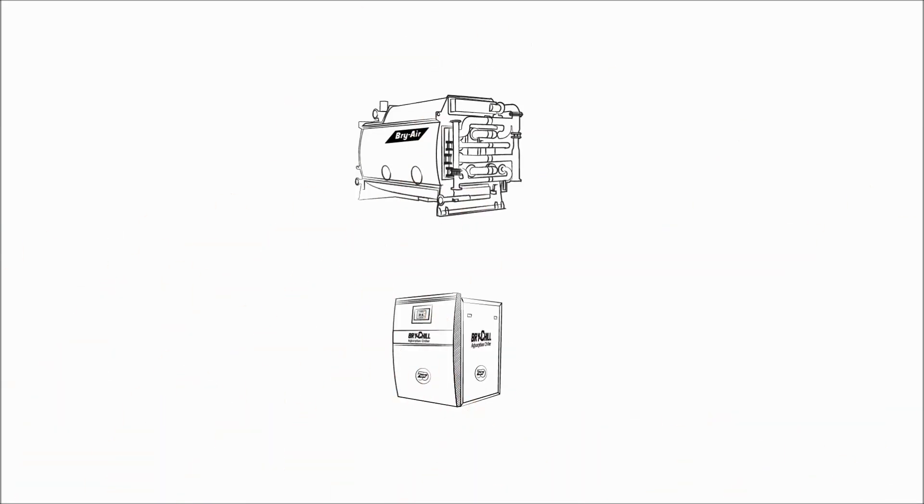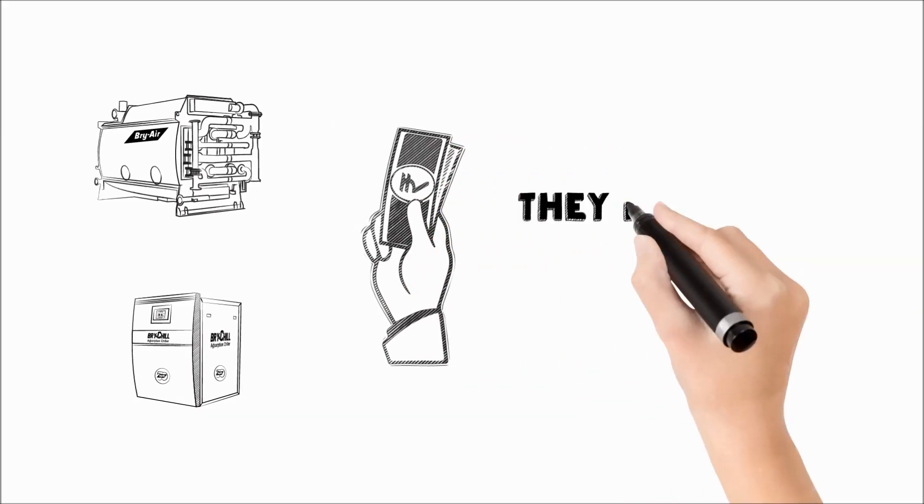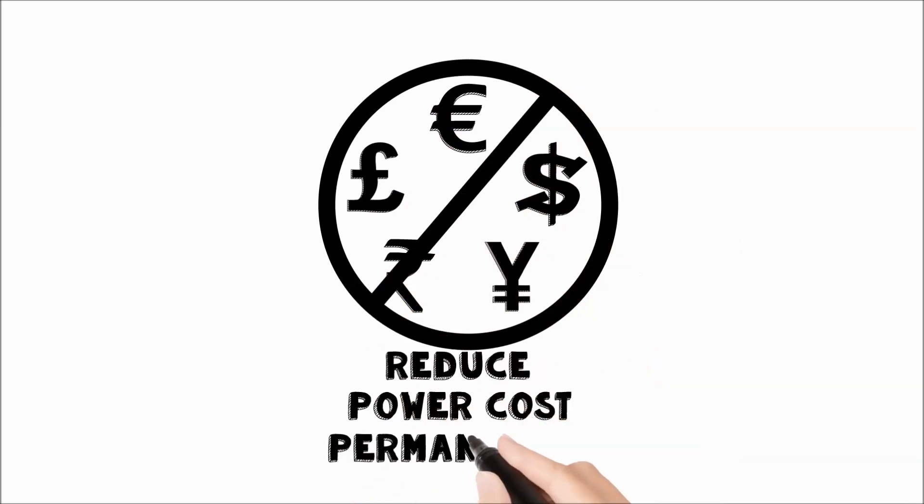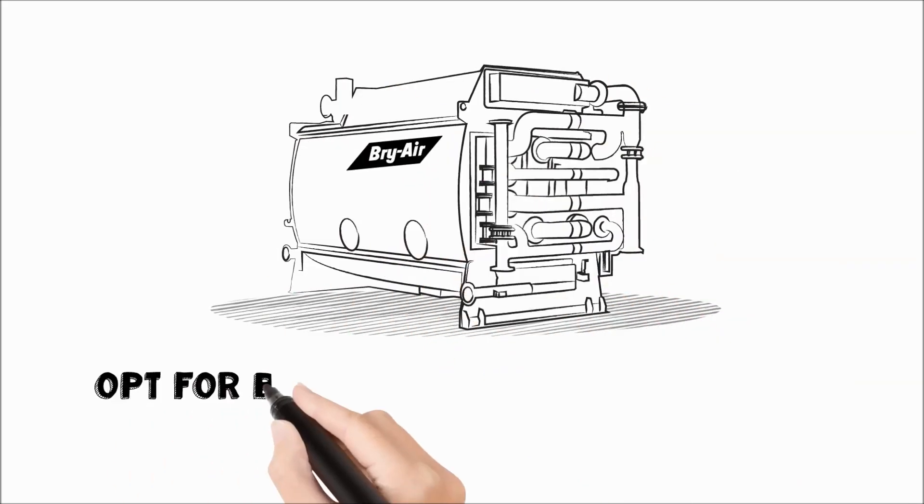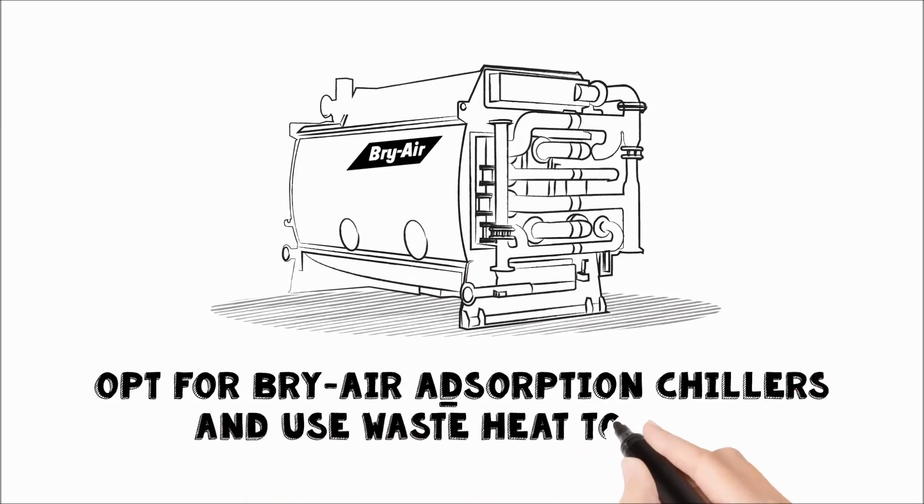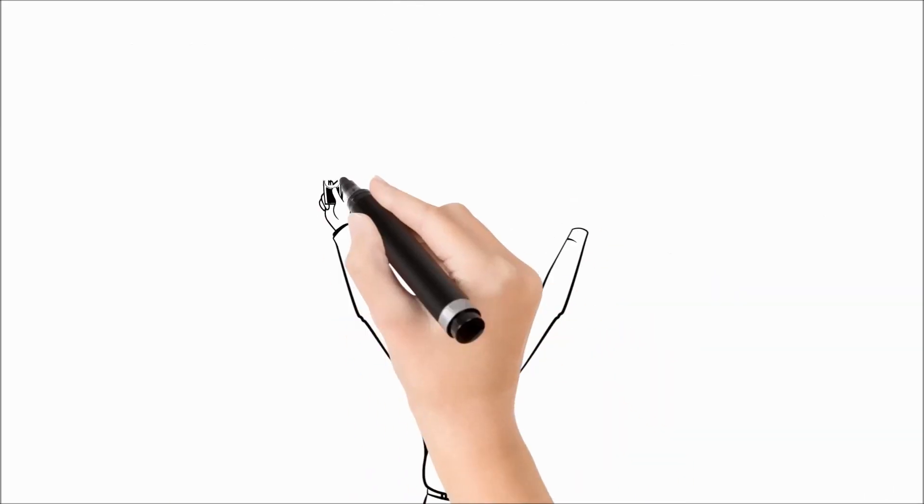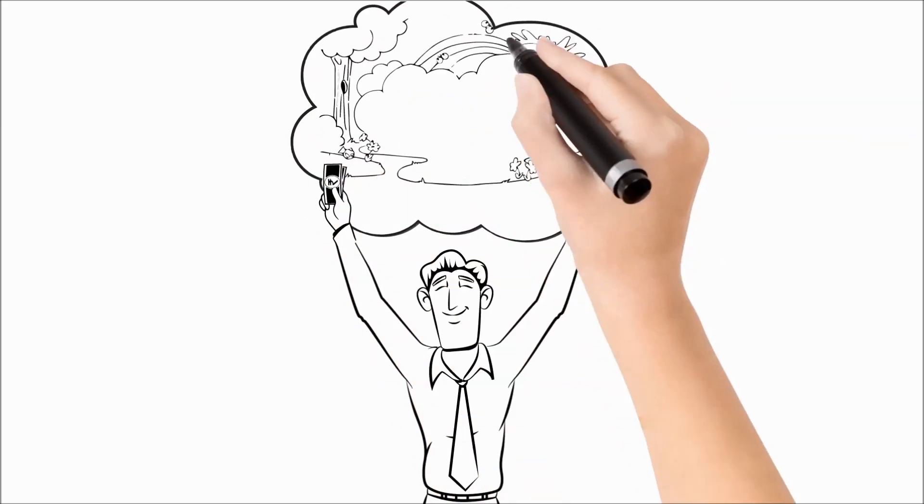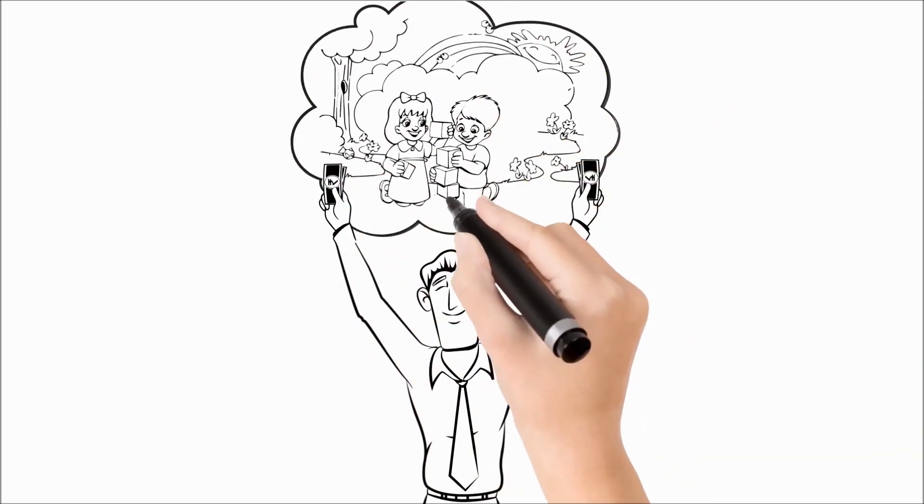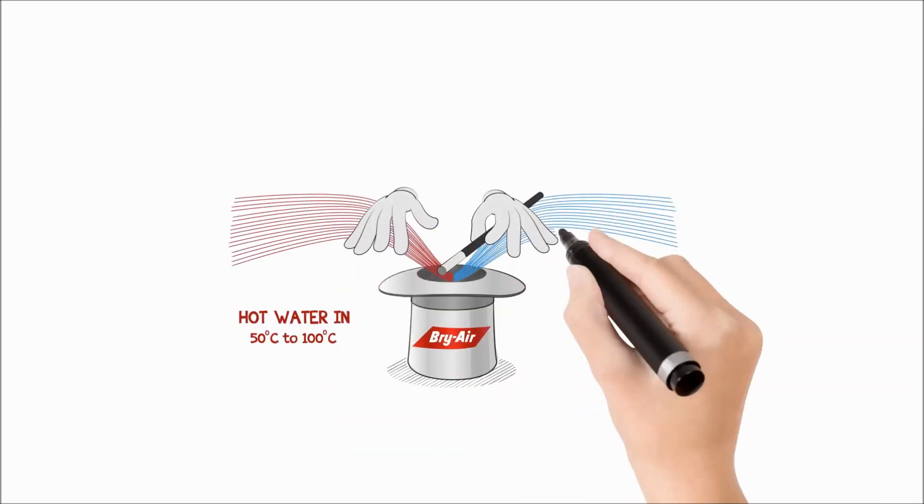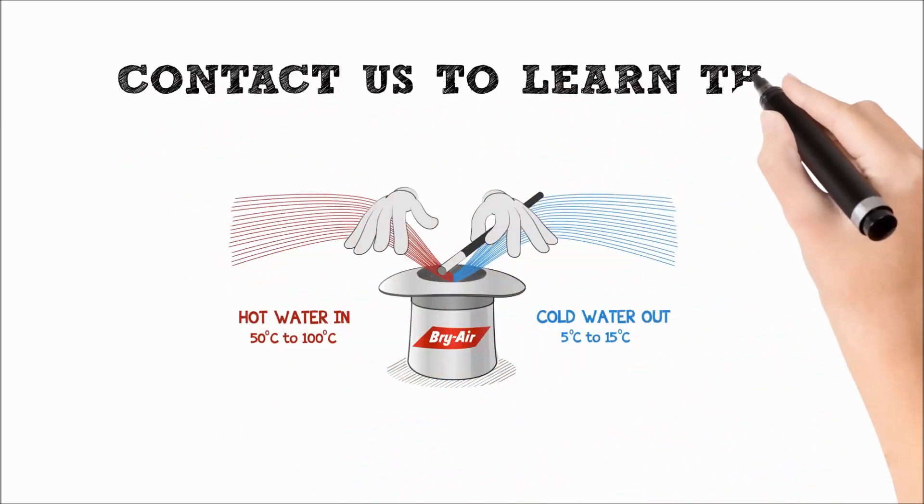In most cases, the Briair absorption chiller pays back in less than three to four years. With rising power costs every day, here's your best chance to reduce them permanently. Opt for Briair absorption chillers and use waste heat to cool. You would love to see savings in your energy bills and also leave a cleaner and healthier environment for your children. Contact us to learn the Briair magic.